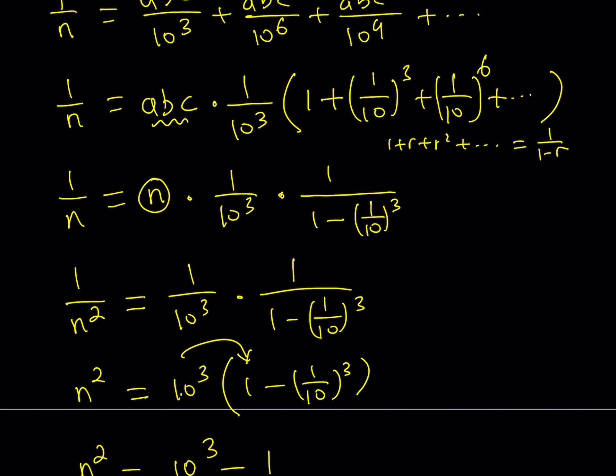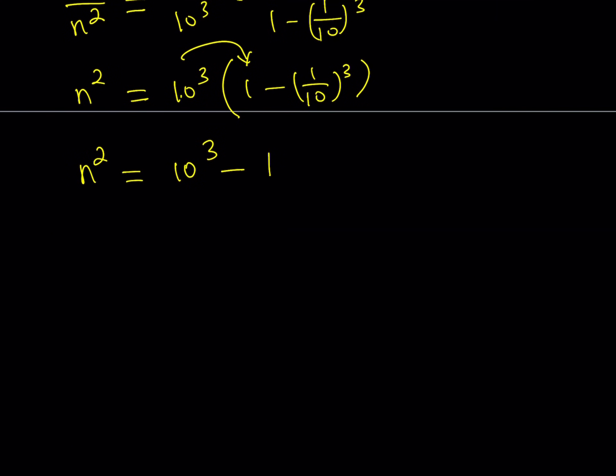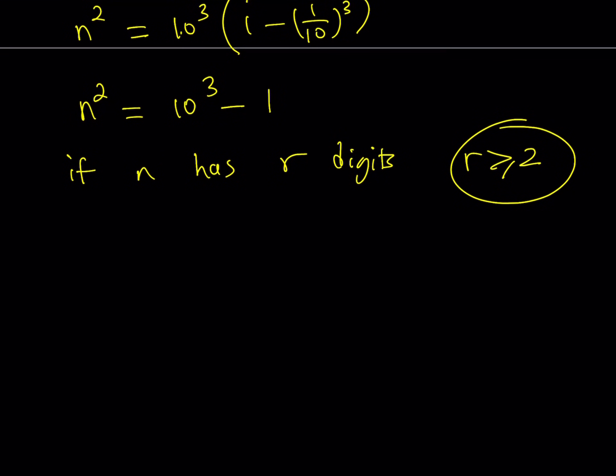But where does the three come from? Remember, we first assume that our number has three digits. So what happens if it has r digits? If n has r digits, of course, you want r to be greater than or equal to two, because we already checked the single digit situation. Now we're going to be looking for more digits. So if n has r digits, then you're going to get the following n squared is going to equal 10 to the power r minus one. So we kind of have to solve this Diophantine equation.